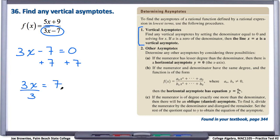And then lastly, we'll divide by 3 on both sides. That leaves us x equals 7 over 3.